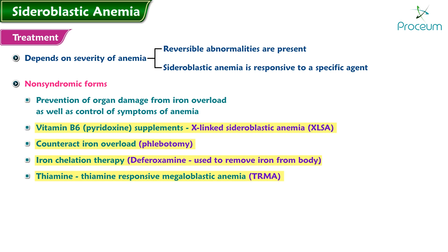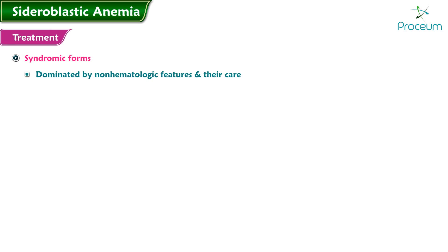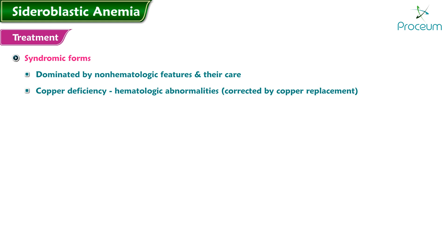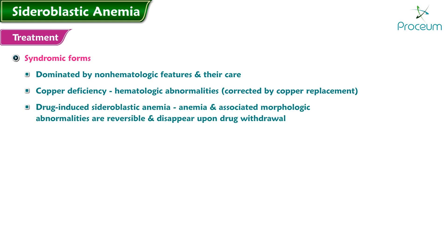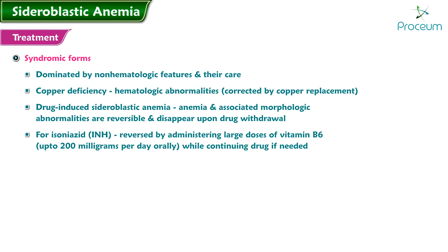Thiamine is used to treat thiamine-responsive megaloblastic anemia (TRMA). In the syndromic forms of congenital sideroblastic anemia, the clinical course is largely dominated by the non-hematologic features and their care. In copper deficiency, the hematologic abnormality should be corrected by copper replacement. In drug-induced sideroblastic anemia, the anemia and associated morphologic abnormalities are reversible and disappear upon drug withdrawal.